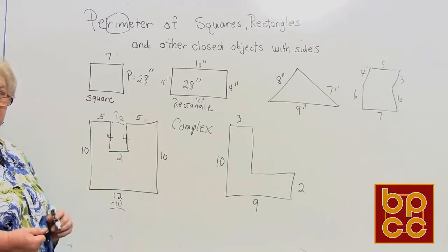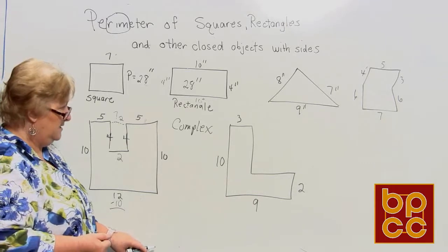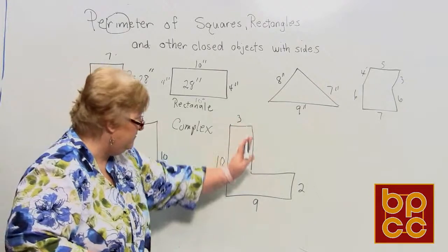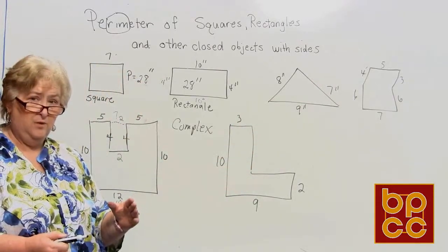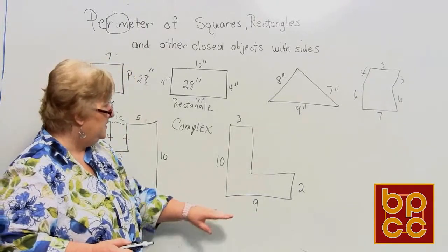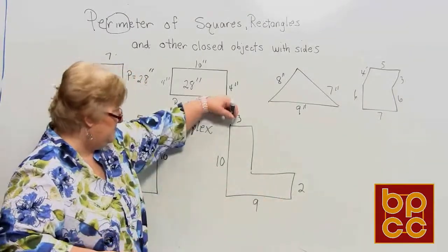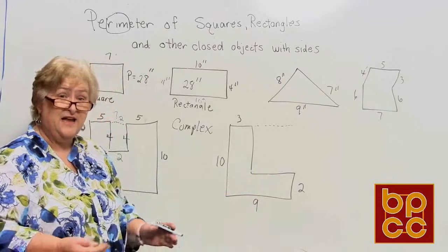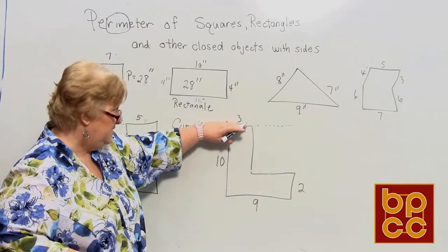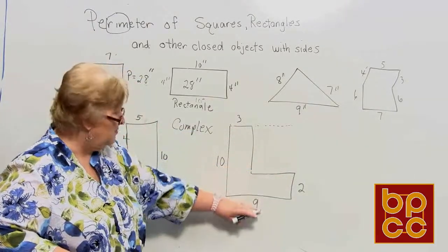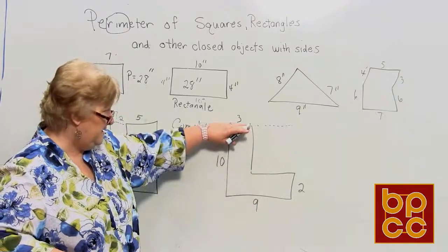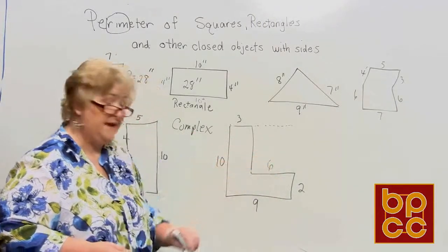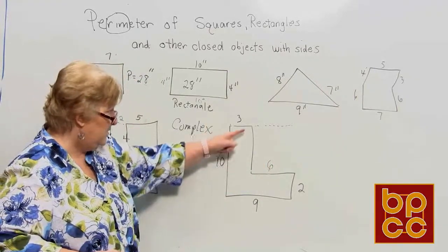Now let's look at this next example where we have two sides missing — one horizontal and one vertical. For the horizontal: the full horizontal is nine. We already have three in place, so three plus how many more equals nine? Three plus six equals nine, so the missing horizontal is six.